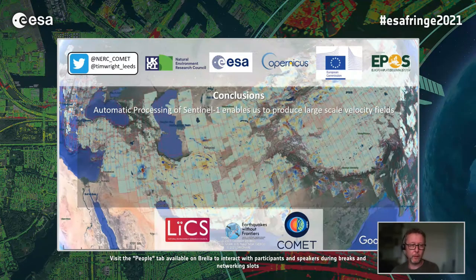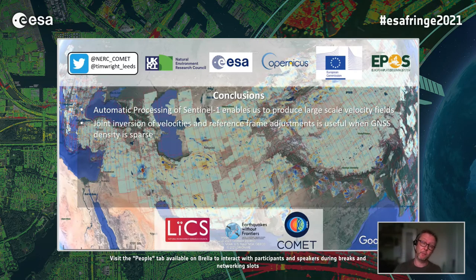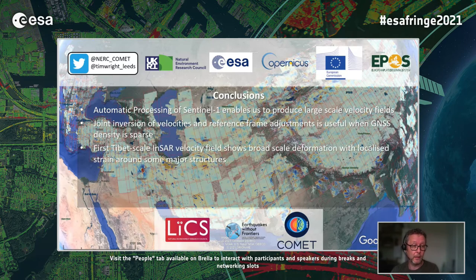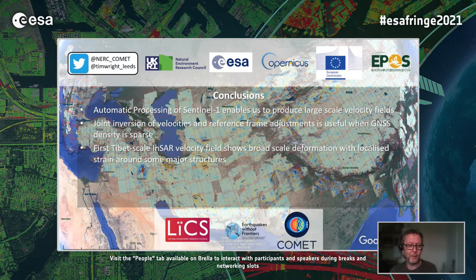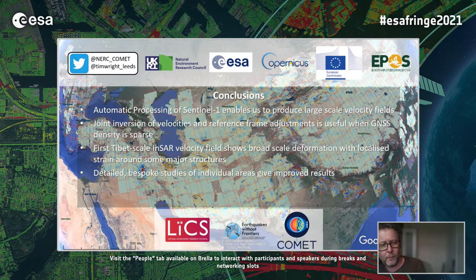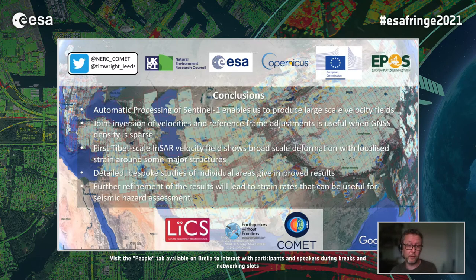To wrap up: automatic processing enables us to produce these large-scale velocity fields. Joint inversions of velocities and reference frame adjustments are useful particularly when GNSS density is relatively sparse. The Tibet-scale INSAR velocity fields show broad-scale deformation as well as localized strain around major structures. Detailed bespoke studies of individual areas give improved results, but further refinement of automatic processing will lead to strain rates useful for seismic hazard assessment. Thank you.